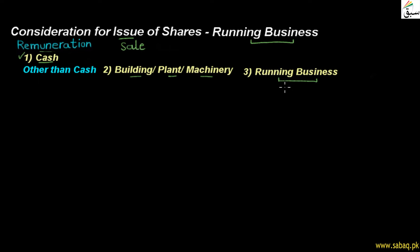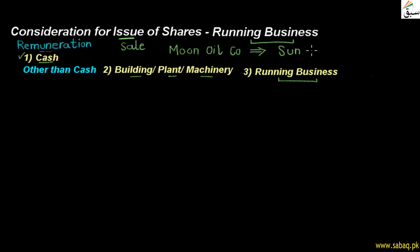Some other person's or some other company's business — the company will acquire it and issue shares in return. Here, our company is Moon Oil Company. Moon Oil Company is going to issue their shares. The business being sold belongs to Sun Oil Company. So Moon Oil Company is taking the business of Sun Oil Company, and in return is issuing its shares.